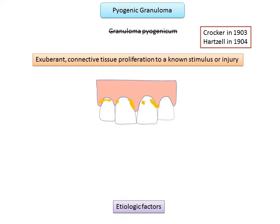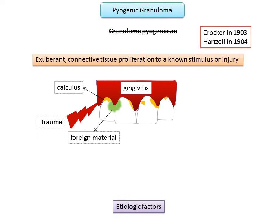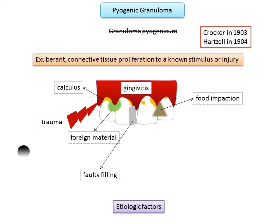Poor oral hygiene, which leads to the development of plaque and calculus, is believed to be the most common etiologic factor. A foreign material can get stuck between the teeth, impinging onto the soft tissues, and can predispose to the formation of pyogenic granuloma. A history of trauma before the development of the lesion is not unusual, especially for extra-gingival pyogenic granulomas.